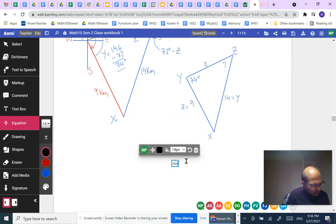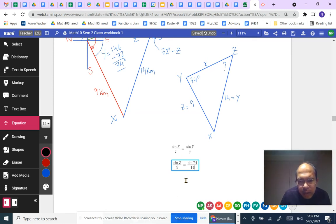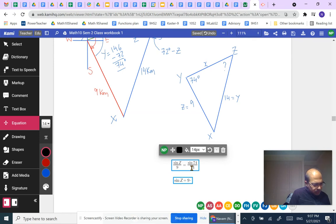Now let's substitute whatever values we know. So sine Z divided by 9 would be equal to sine 74 degrees divided by 14. Now let's just move 9 over to the other side by multiplying both sides by 9. So sine Z will be equal to 9 times sine 74 divided by 14.